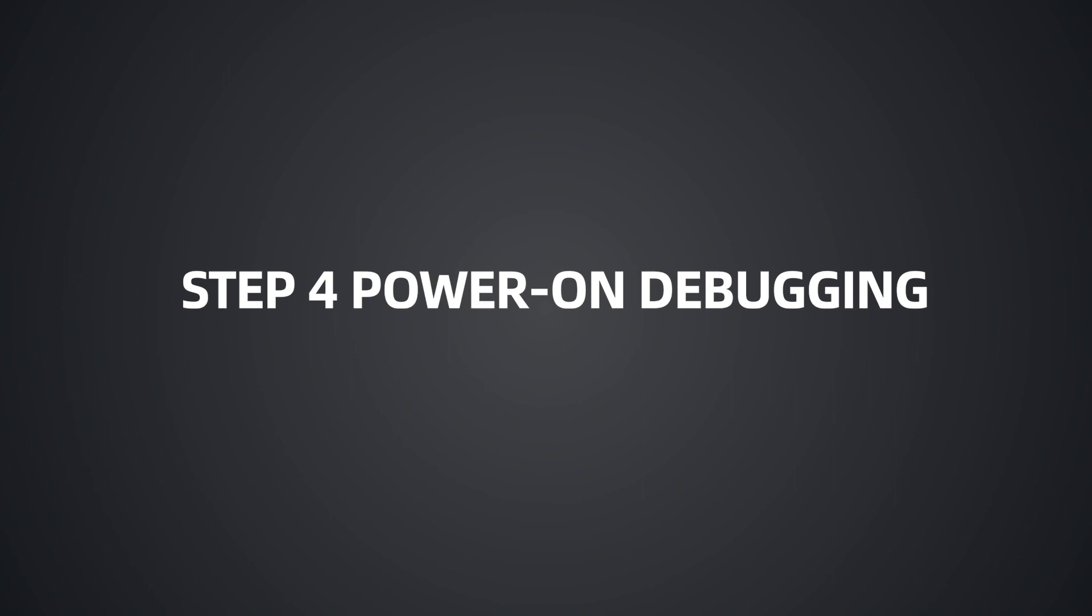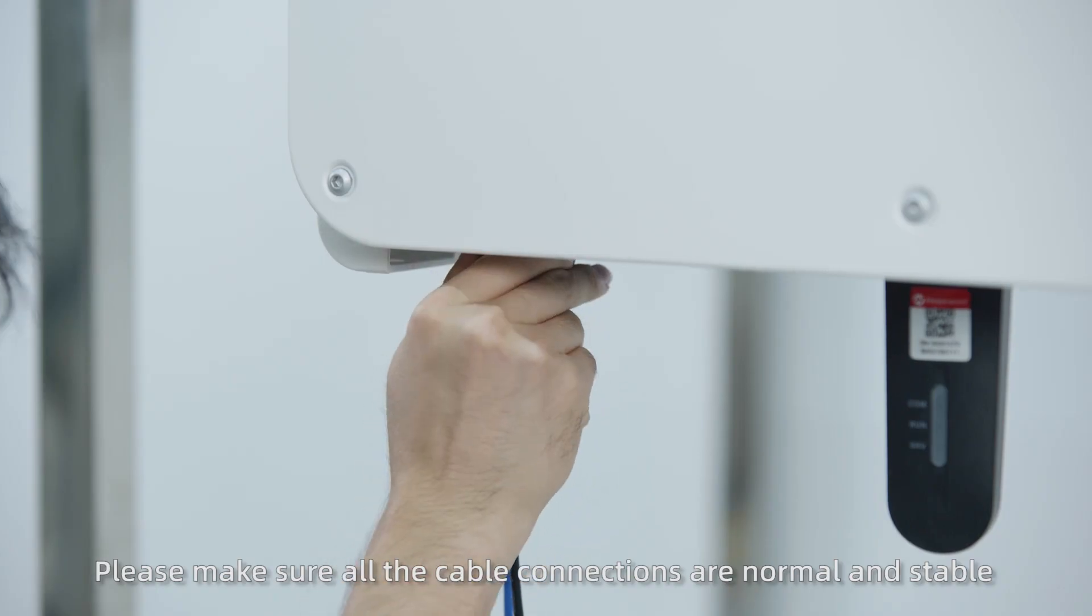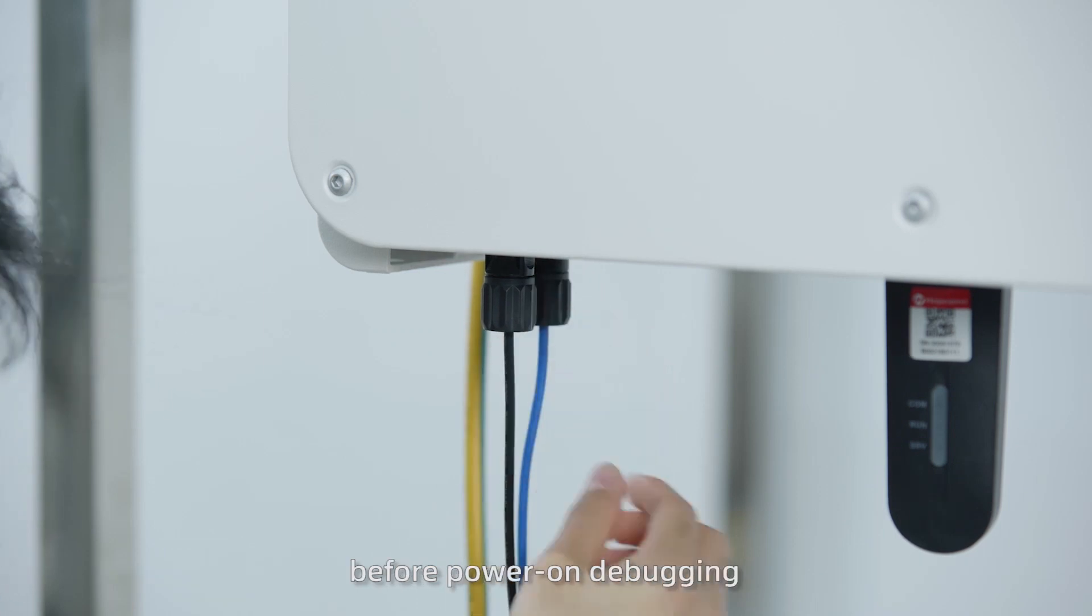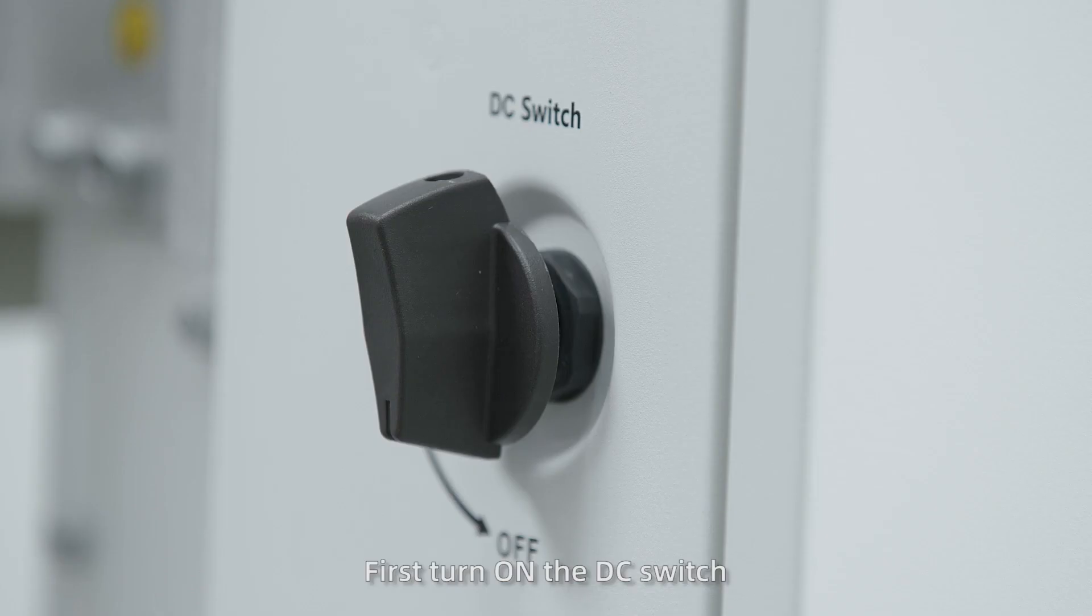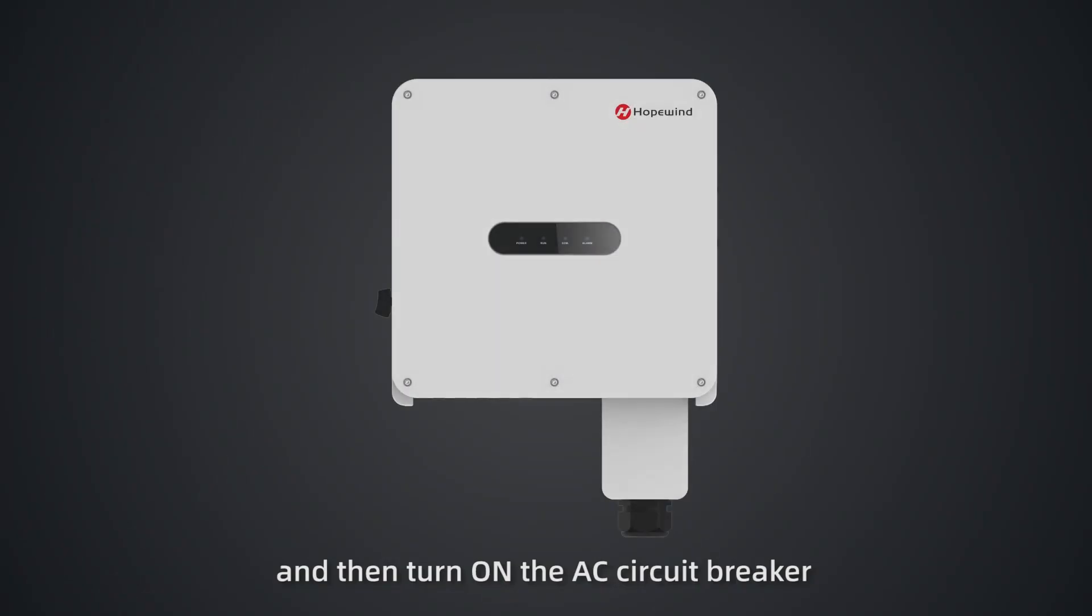Step 4. Power on Debugging. Please make sure all the cable connections are normal and stable before power on debugging. First turn on the DC switch, and then turn on the AC circuit breaker. When the system has no faults and meets the startup conditions, the inverter will start automatically.